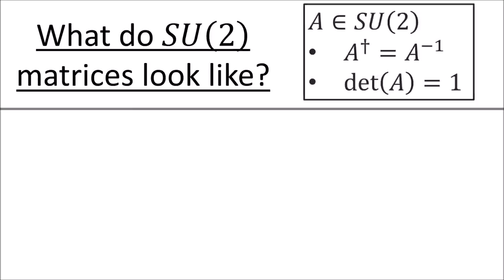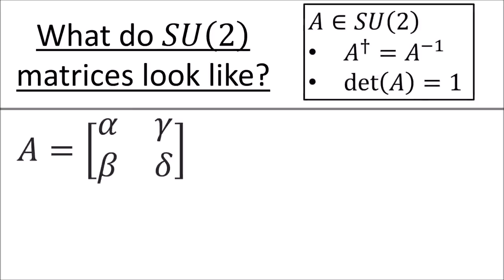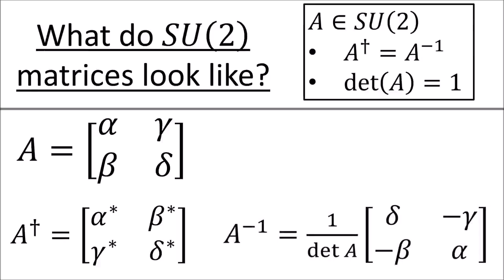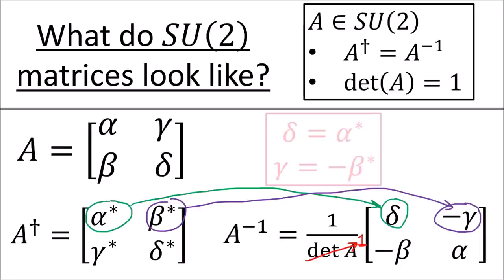What do SU(2) matrices actually look like? If we take an SU(2) matrix A with complex entries alpha, beta, gamma, delta, we know that A dagger involves flipping the off-diagonal components and complex conjugating all the entries. We also know that the inverse of any general 2x2 matrix will take a specific form. Since the determinant of an SU(2) matrix is 1, and since A dagger equals A inverse, we immediately get that delta equals the complex conjugate of alpha, and gamma equals the negative complex conjugate of beta.